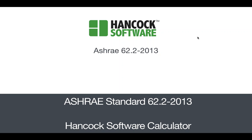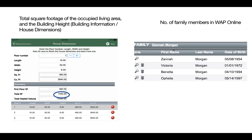The ASHRAE 62.2-2013 Calculation in Hancock Software. Before opening the calculator, make sure a few of the fields entered in HEAT and Hancock WAPOnline are correct. These fields are used in the ASHRAE 62.2-2013 calculation.